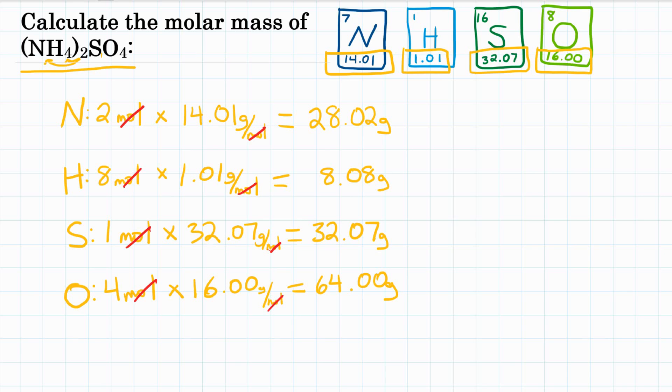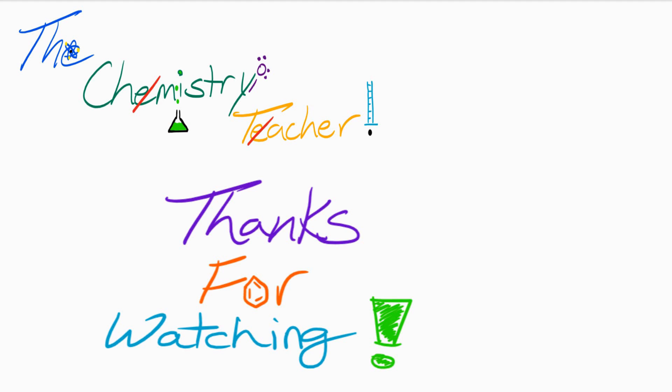Okay, last step is to add all of these masses together. So we're going to add all of these together: 28.02 plus 8.08 plus 32.07 plus 64.00 gives us a total of 132.17 grams. And this is molar mass, so sometimes it's represented as grams or grams per mole. So to sum it all up again, calculate the molar mass of ammonium sulfate: that would be 132.17 grams or grams per mole.